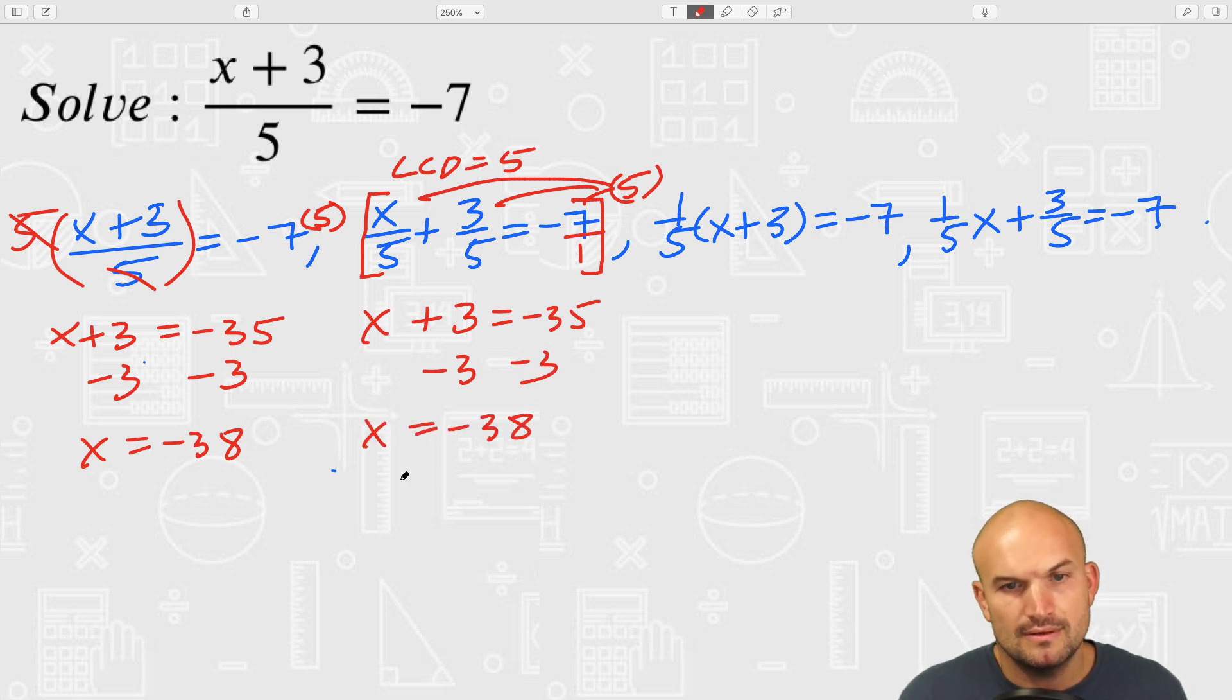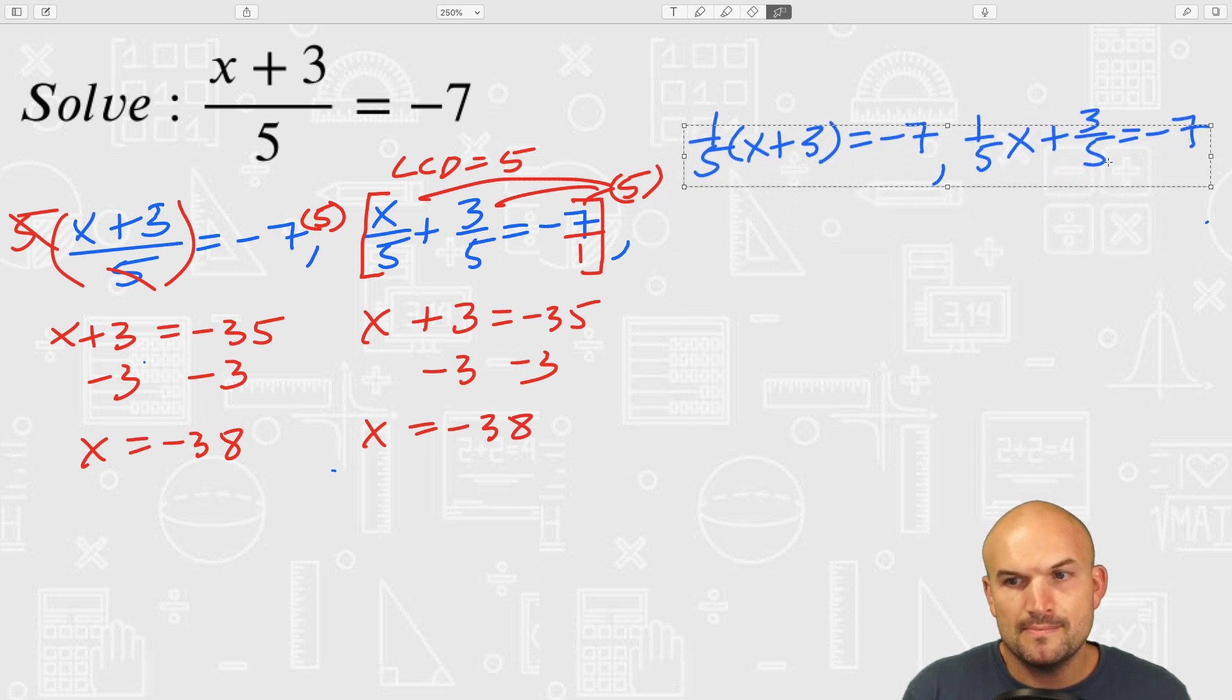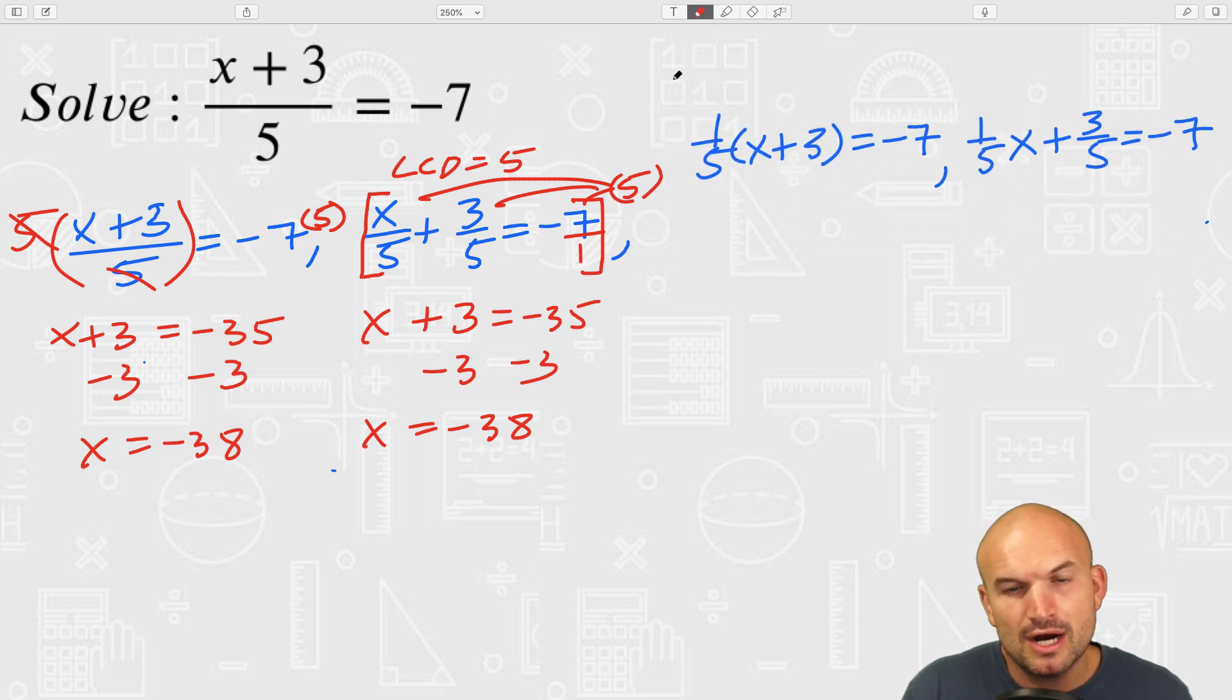And again you can see we're gonna get the exact same answer. Now in this example, let me move these up. So in this next example what we're looking at is now I have one-fifth times x plus 3. Another way we can look at this is, if I want to undo multiplying by one-fifth, I can simply just go ahead and multiply by the reciprocal. And that's kind of exactly what I was doing here. If I multiply by 5 over 1...